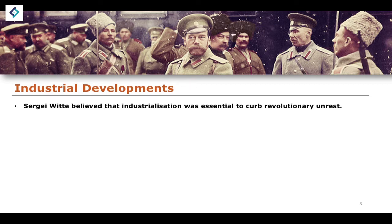We've already come across Sergei Witte, who was a finance minister for previous tsars. He believed that industrialization was one of the things essential not only to economic development, but also — as he described it — to curb revolutionary unrest. The Russian state industrialized at a slower rate, in fact a few decades after the Industrial Revolution began to take shape in the rest of Western Europe.